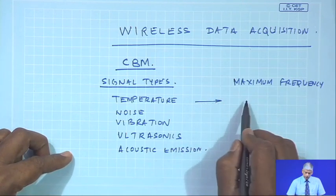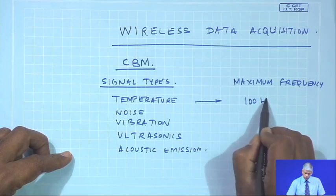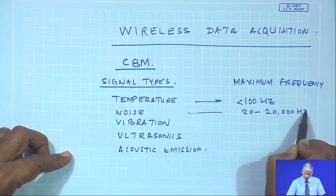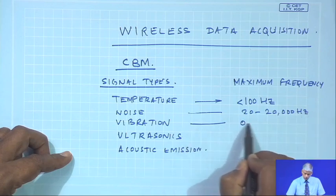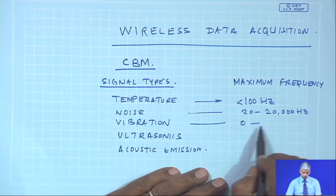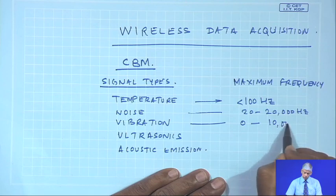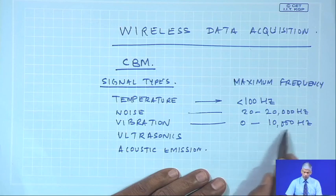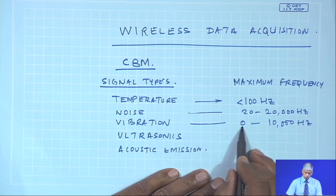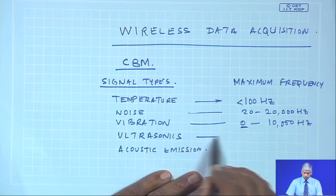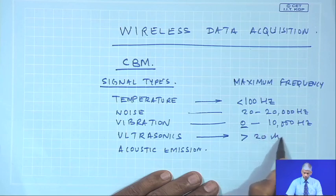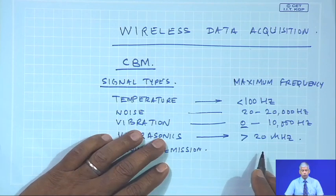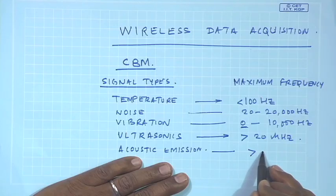Typically in mechanical systems: temperature frequency is less than 100 Hz; noise is 20 to 20,000 Hz; vibration is anywhere from 0 up to about 10,000 Hz — because sources of vibration like electrical motors, IC engines, and machineries have enough information up to about 10,000 Hz. Ultrasonics is anything greater than 20 kHz — used for NDT and sonars for navigation — and acoustic emission could be greater than 1 MHz.